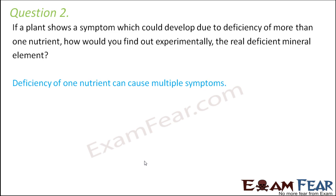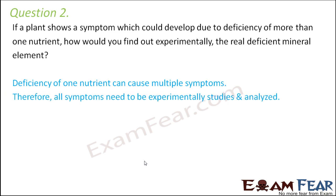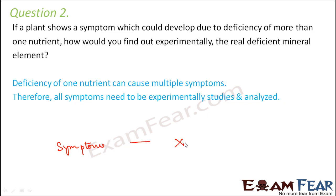Deficiency of one nutrient can cause multiple symptoms. Therefore all symptoms need to be experimentally studied and analyzed. Let me give you an example. Let us suppose the following symptoms are seen in a plant. The symptoms that you observe are X, Y, Z — I am not naming what these symptoms are. X can be yellowing of leaves, Y can be retarded growth, Z can be delayed flowering. These are the three symptoms which you observe in a plant.